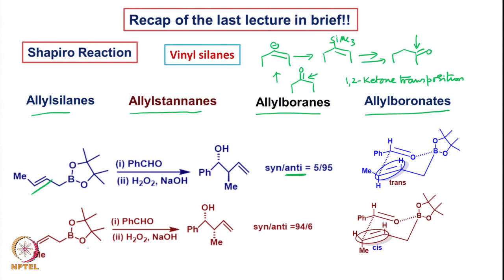The vinyl group here — if we move the electron density in this particular fashion — then we get this particular product. The phenyl group is equatorially oriented and therefore will always be in that position. It is only the remaining boron that has to be close to the oxygen. The geometry of the double bond is fixed, and therefore the OH group is going down and the methyl group is going up, so this part of the molecule is also fixed.